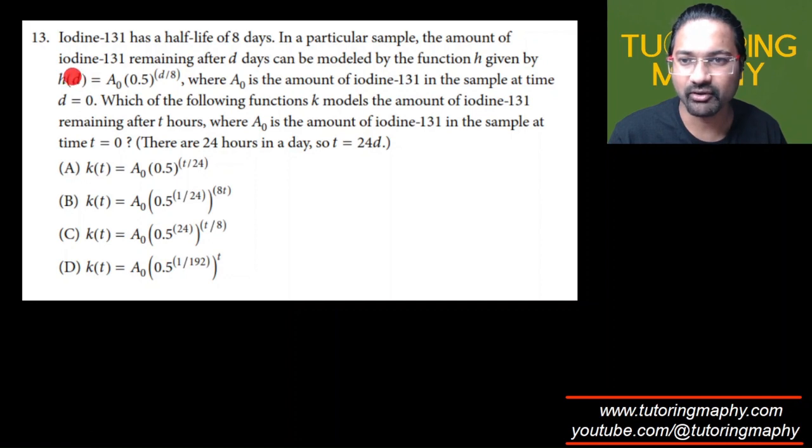And this is obviously giving us the amount of iodine remaining after d days. And what they need from us is the amount of iodine remaining after t hours. So all we have to do is convert the days into hours. And we know that t is 24d. That's clearly given to us. So the number of days are going to be t over 24. So all we have to do is replace d with t over 24.